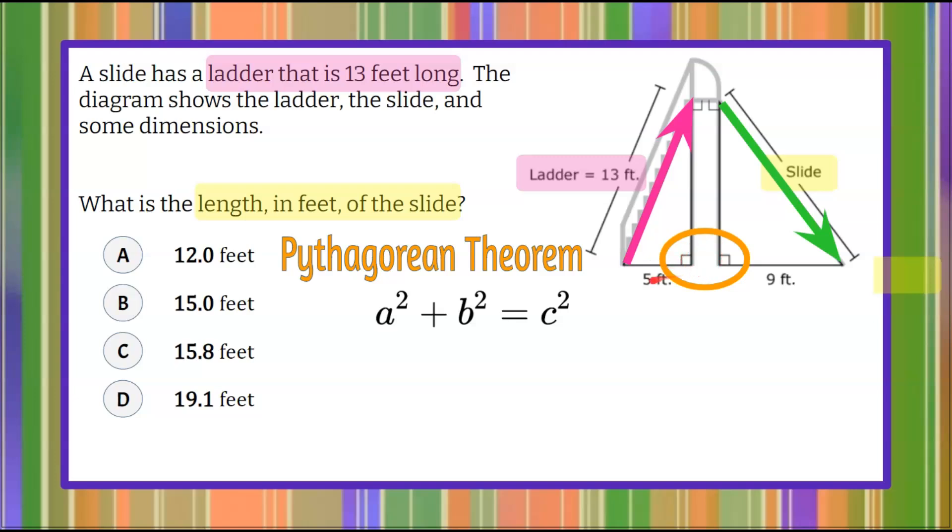So because we have these right angles, we can see that the other measurements given, the a squared plus b squared, would be 5 feet and this unknown leg right here, which we're going to label b. Then we're going to be understanding that this ladder is our c. So let's put in what we know.